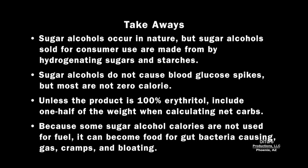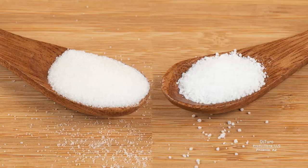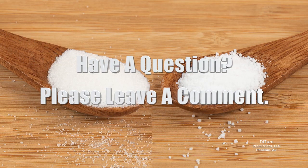Some takeaways: sugar alcohols for consumer use are made by hydrogenating sugars and starches. Sugar alcohols do not cause blood glucose spikes, but most are not zero calorie. Unless the product is 100% erythritol, include one-half of the weight when calculating net carbs. Because some sugar alcohol calories are not used for fuel, it can become food for gut bacteria, causing gas, cramps, and bloating. Please leave a comment if you have any questions. Thank you for watching, and healthy eating!